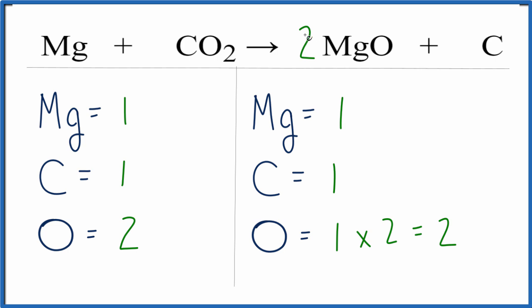But the 2 applies to everything here. So we have one magnesium times the 2, and that means we have two magnesium atoms. All right, so we fixed the oxygens.